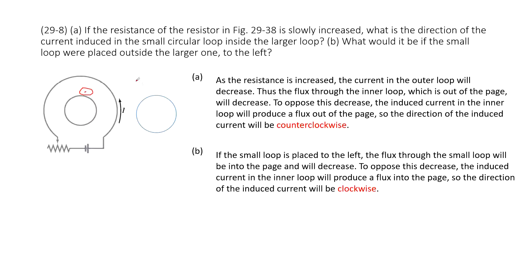On the outside of the loop, the magnetic field is pointing in. Now, inside it is pointing out. That means for part A, the small loop inside this larger loop — the induced current in the small loop has a magnetic field pointing out.